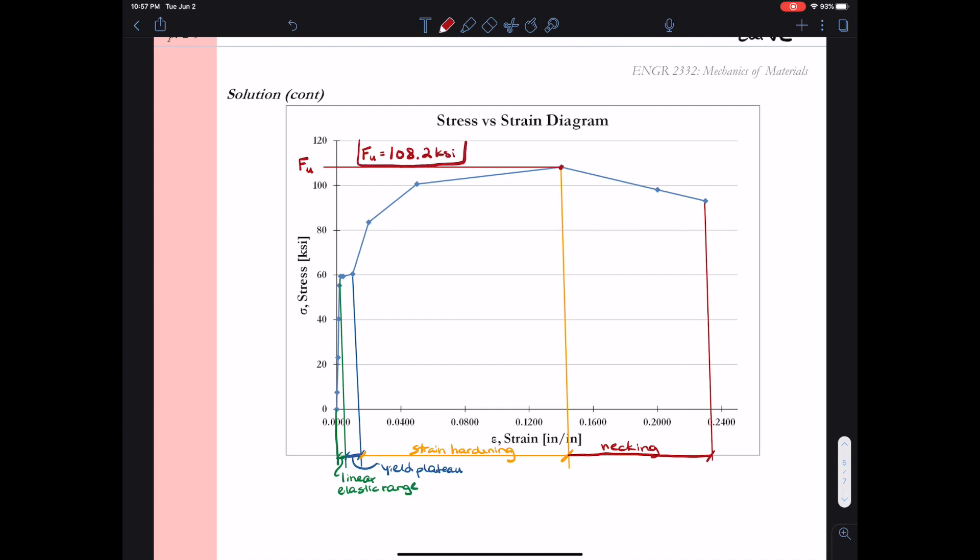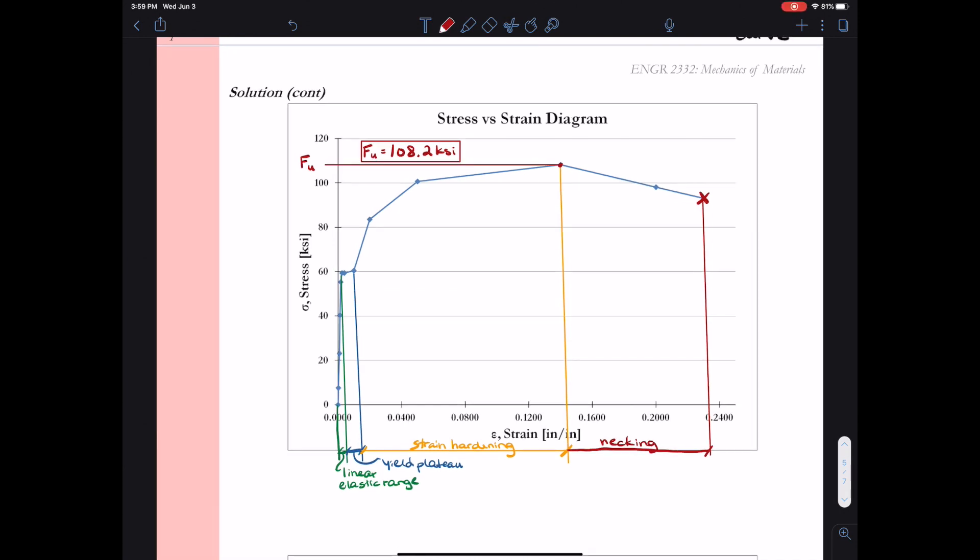Now that we've identified the ultimate stress, we can tackle the last part of the problem, which wanted the stress and the strain at fracture. And so it's just important to remember that a stress strain plot is just an x-y plot of data. So at fracture, fracture is the last point we have before separation occurs. It's the last data point we collect. So typically we denote that with an x. So I've gone ahead and sketch that x in here on the plot. And then I want the strain and the stress at fracture. So I just want the x-y data point for that last bit of data.